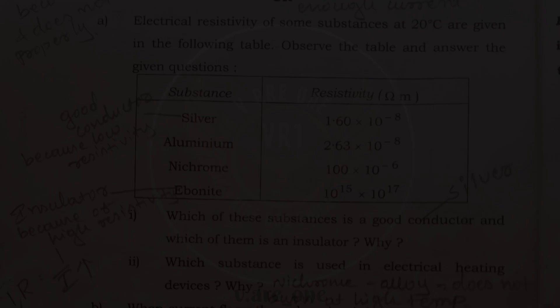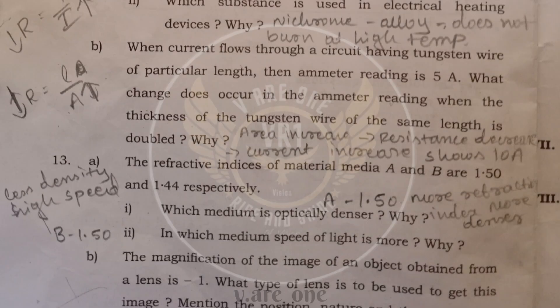Next B. When current flows through a circuit having tungsten wire of particular length then ammeter reading is 5 ampere. And what change does occur in the ammeter reading when the thickness of the tungsten wire of the same length is doubled? Why? So here we are increasing area. If the area increases resistance will decrease. If the resistance decreases current increases. So 5 ampere changes to 10 ampere. Means it will double.